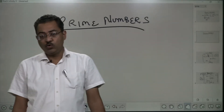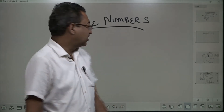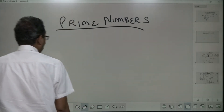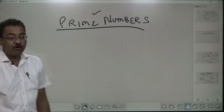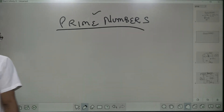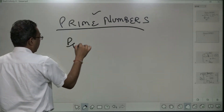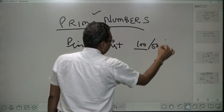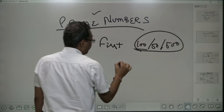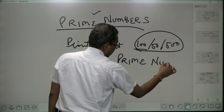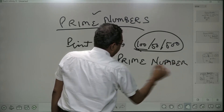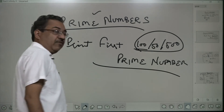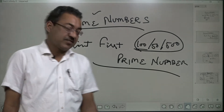I hope you have covered my last two videos containing the concept of prime numbers and how to print all the prime numbers between two limits. Now this is also a program based on prime numbers. Here what I want is to give you a program which prints the first hundred, fifty, five thousand, or any number of prime numbers. The difference from the previous videos is that here I want to print the first hundred prime numbers.